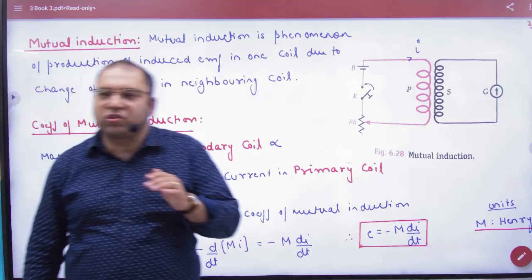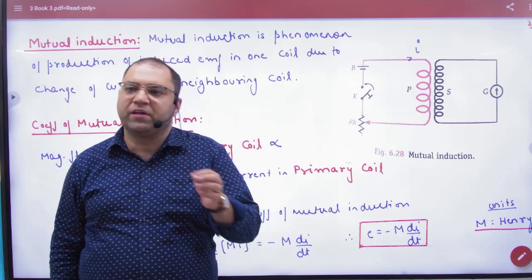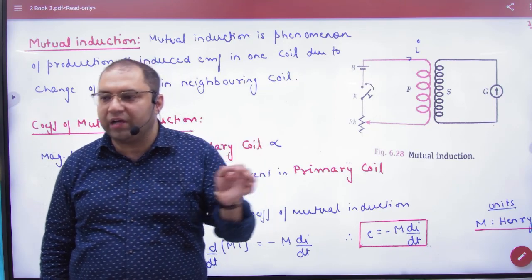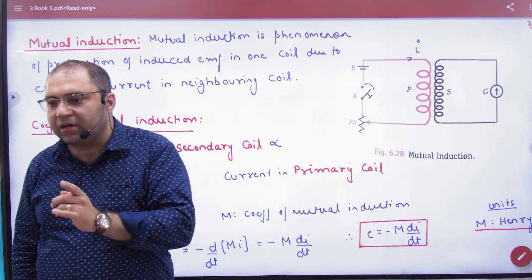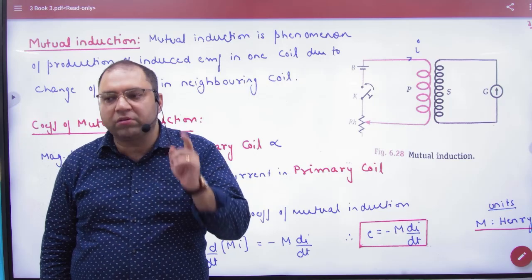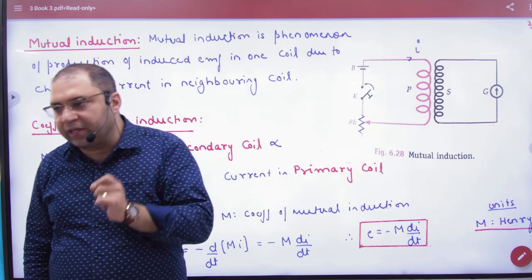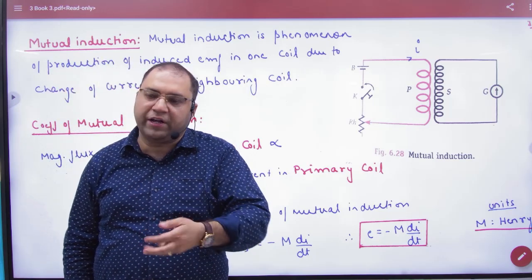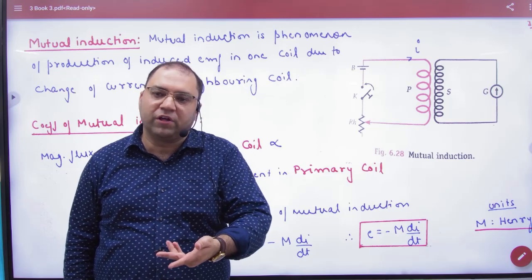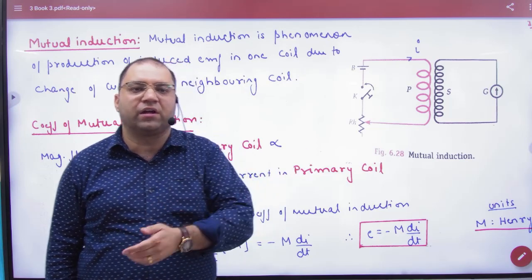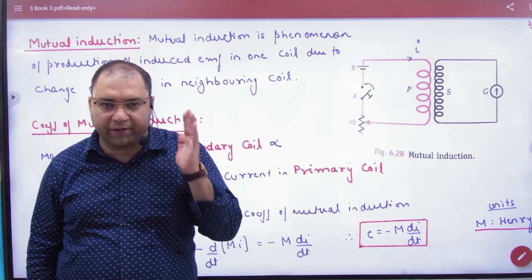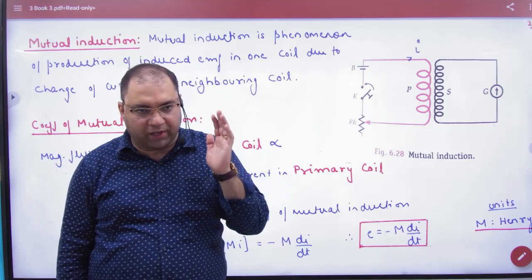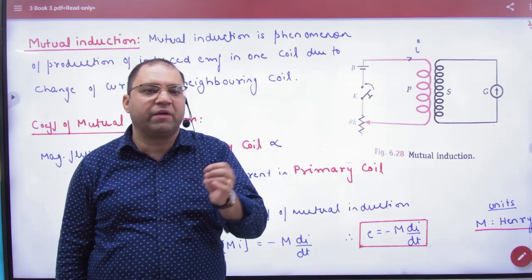We have done self-induction with a solenoid. If I increase or decrease the current — meaning change in that solenoid — the induced current or induced EMF will oppose the increasing or decreasing current. We call this self-induction. Now we are going to do mutual induction.